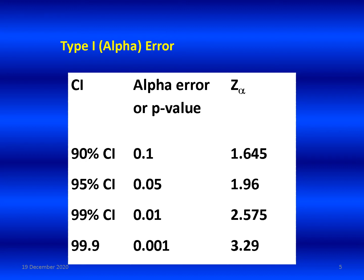These are the various Z alpha values for various alpha error levels. When alpha error is 0.1, that means 90% confidence interval, Z alpha is 1.645. When alpha error is 0.05, or 95% confidence interval, Z alpha is 1.96. Z alpha is 2.575 for 99% confidence interval, or alpha error of 0.01. Please remember this.